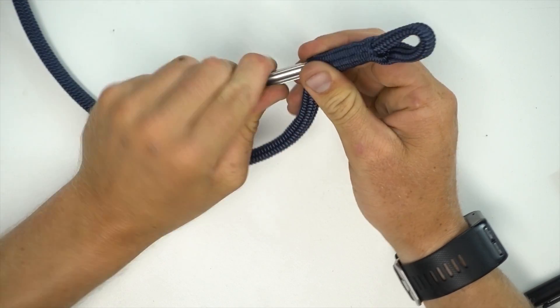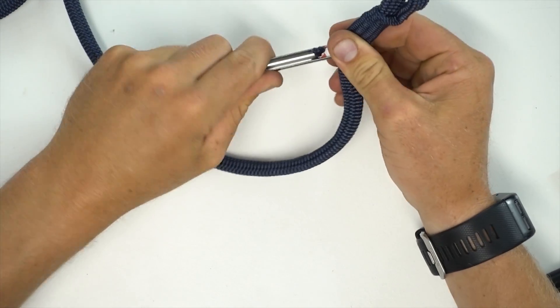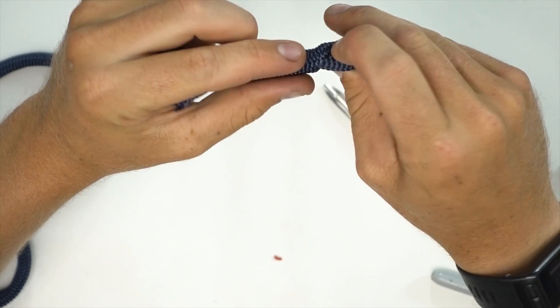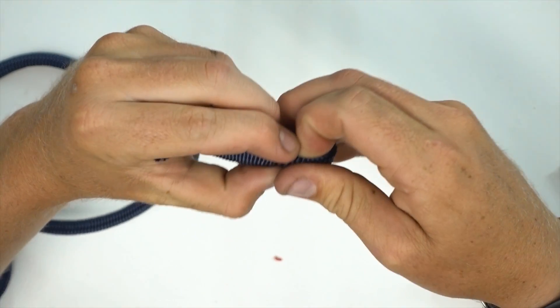We pop the cover out, remove our tape, and then we size our loop.